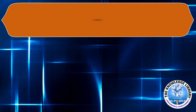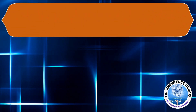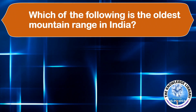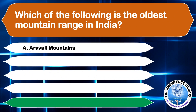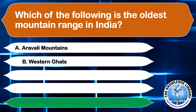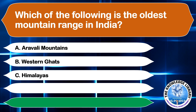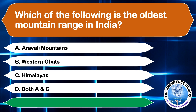Which of the following is the oldest mountain range in India? A. Aravalli Mountains, B. Western Ghats, C. Himalayas, or D. Both A and C. The correct answer is option A, Aravalli Mountains.